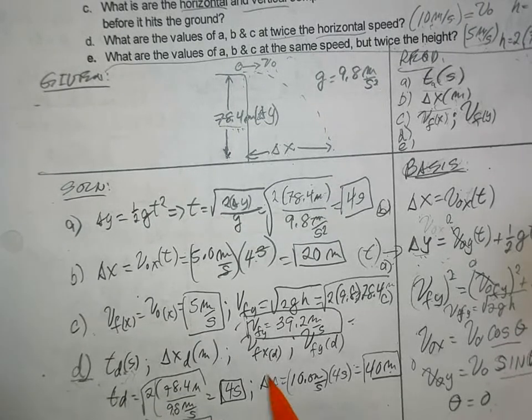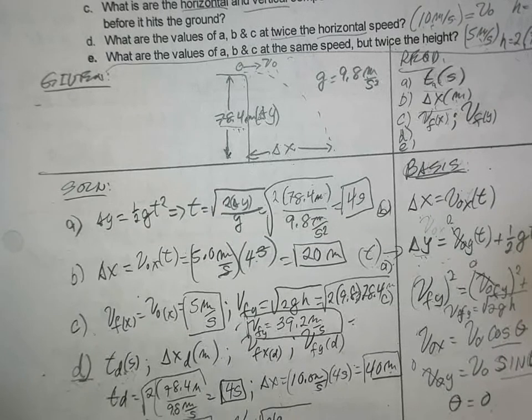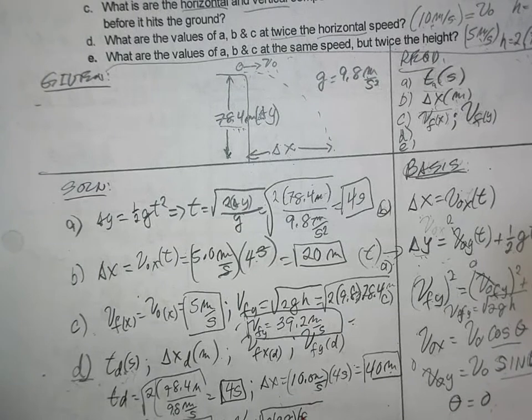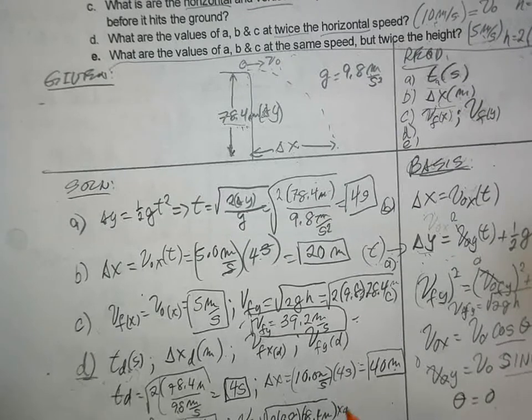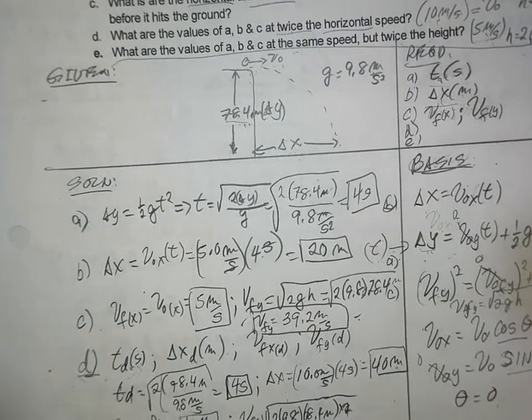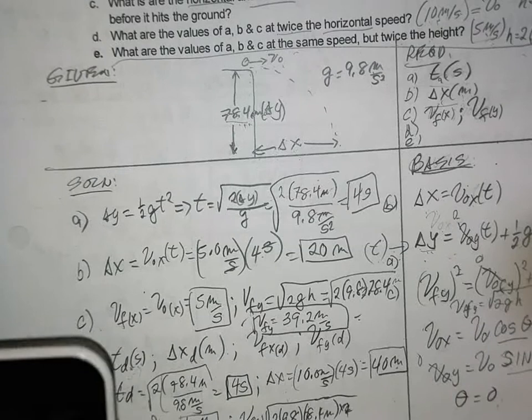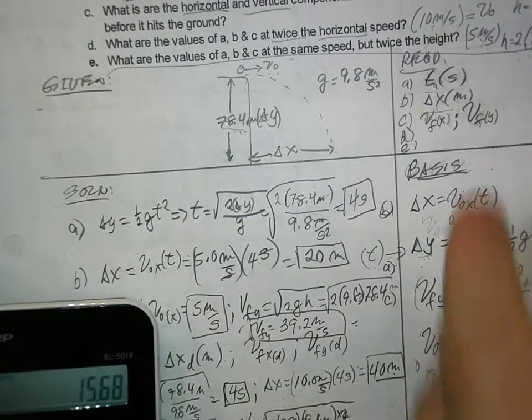And then the last part here is v f y. And it's the square root of 2 times 9.8 times the height, 78.4 meters. Oh, times 2. So let's do that. Again, 78.4 times 2. Because that's the height, right? The height is doubled.